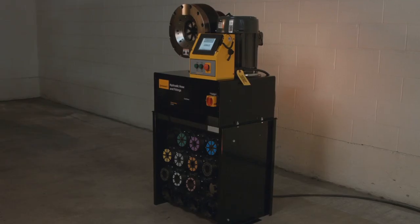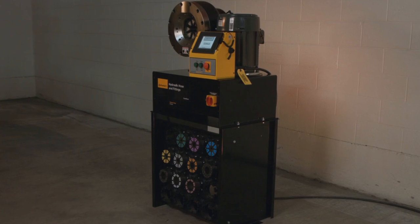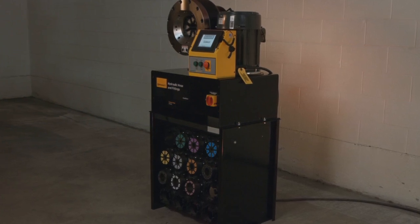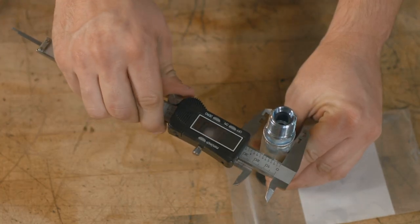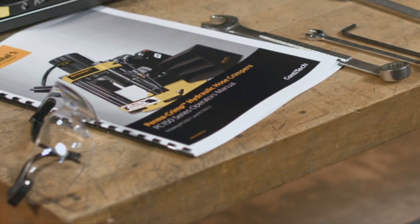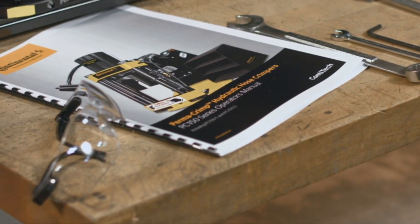In addition to the crimper and dies, the only additional tools that may be required for operation are calipers or micrometers as well as safety glasses or other protective devices that may be required by your employer.